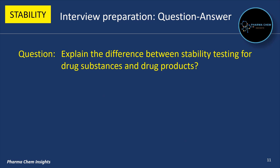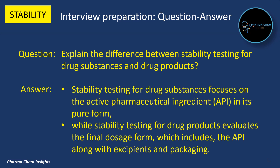Next question: Explain the difference between stability testing for drug substances and drug products. Stability testing for drug substances focuses on the active pharmaceutical ingredient (API) in its pure form, while stability testing for drug products evaluates the final dosage form, which includes the API along with excipients and packaging.